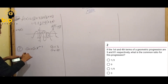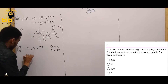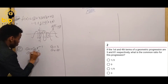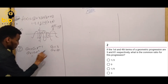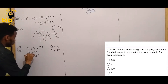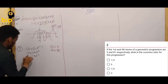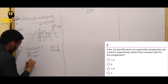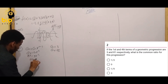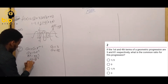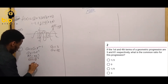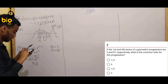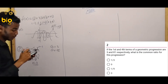So g4 is equal to g1 times r to the power of n minus one — for n equals 4. g1 is 3, g4 is 81. So 81 is equal to 3 times r cubed. Dividing both sides by 3 gives r cubed equals 27, so r equals 3.